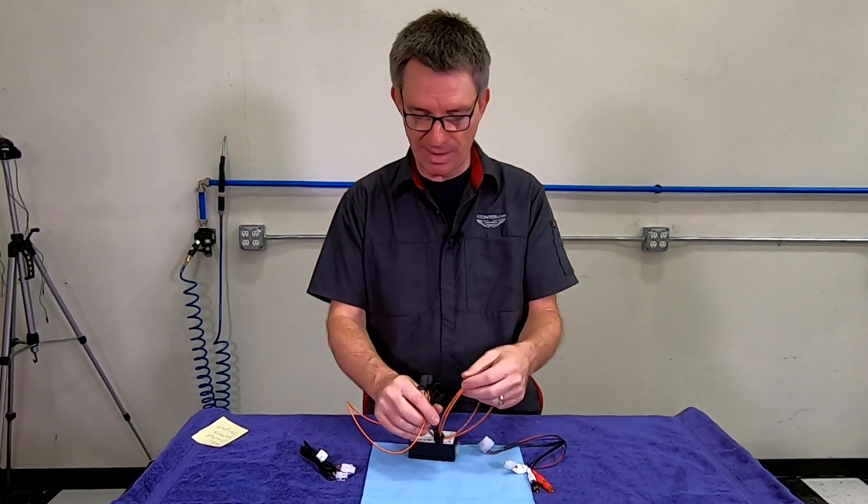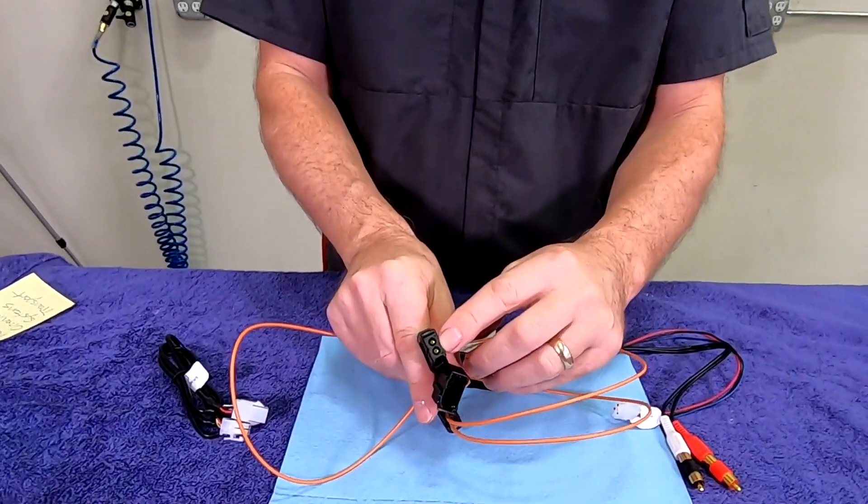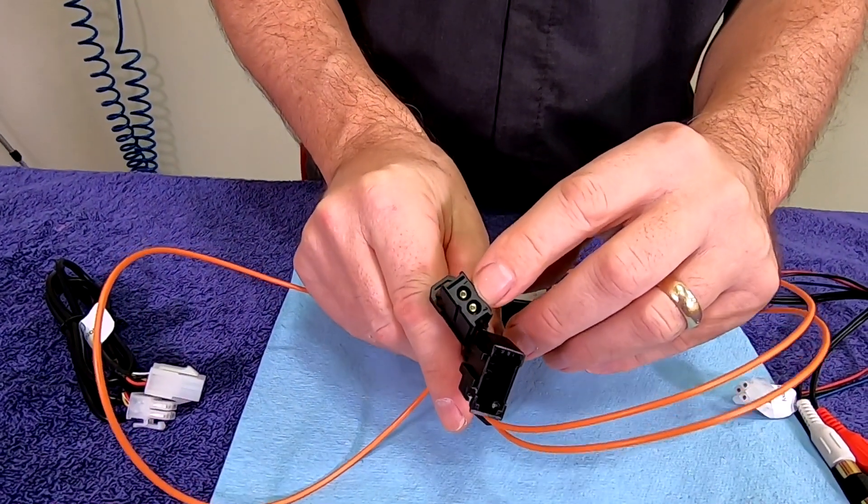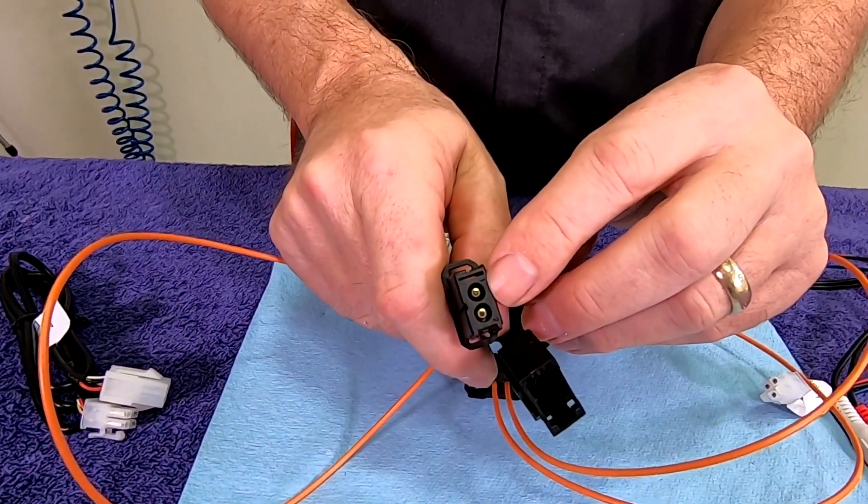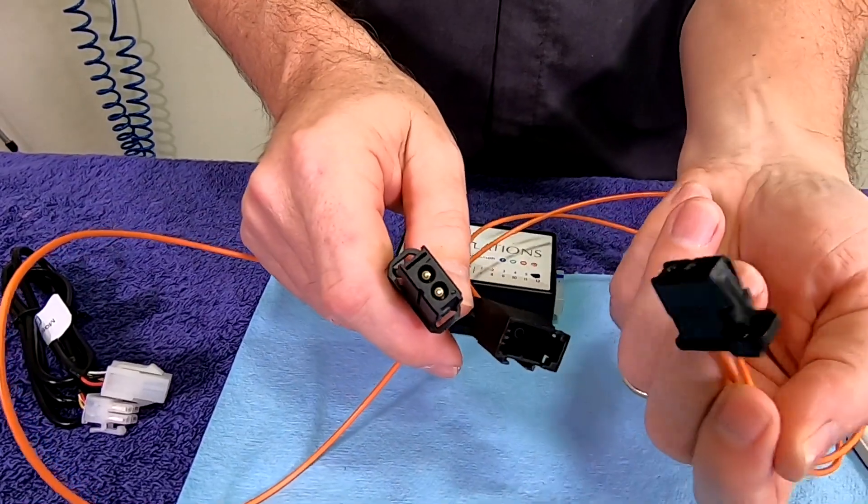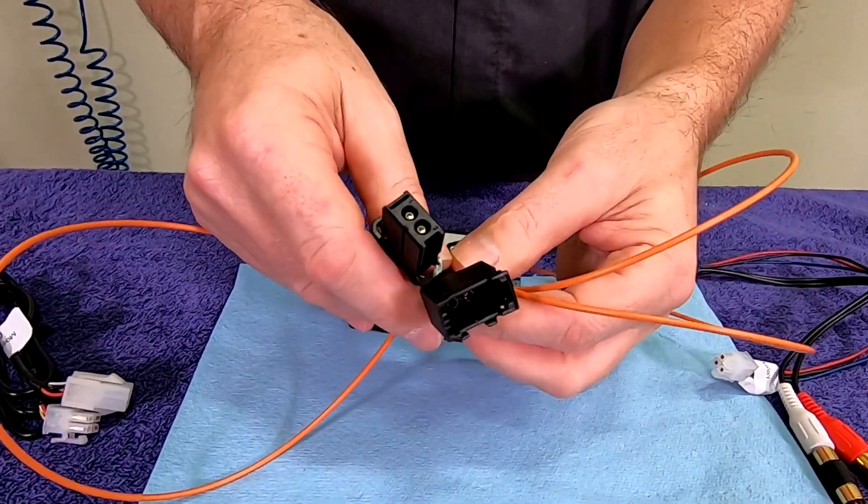And since this is optical, you can actually even see in the end here you might even be able to get a glint off the lights. There's glass connections, that's the end of the fiber cables. And if you're fitting this in the car while it's dark, you'll actually see those glowing red once it's hooked up.